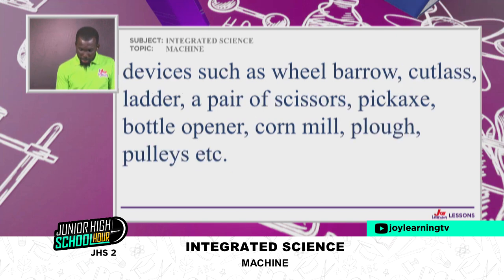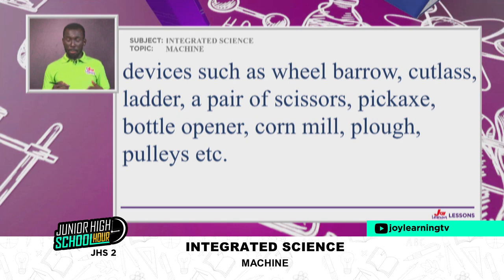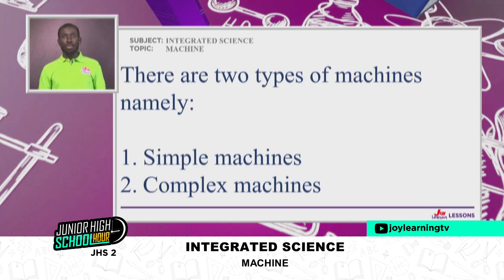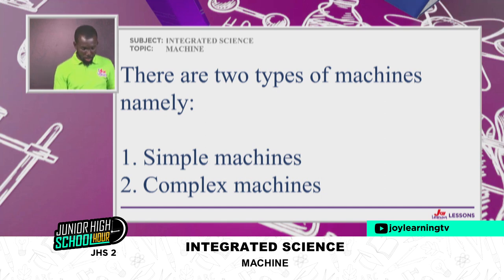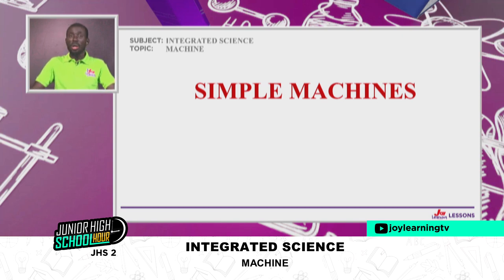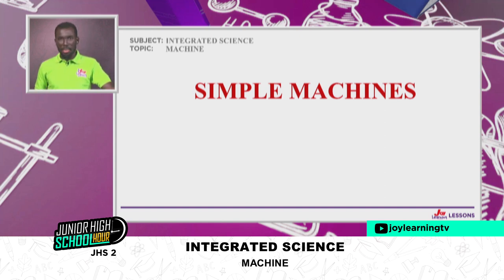Examples of simple machines or devices include: a wheelbarrow, cutlass, ladder, pair of scissors, pliers, bottle opener, cornmill, a plow, a pulley, and the rest. A simple machine is a simple device that helps to do work, having simple parts to perform the work.